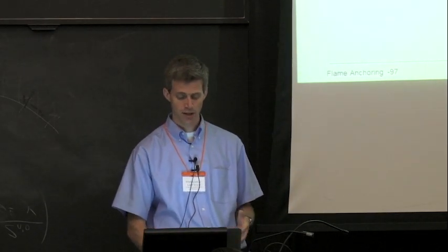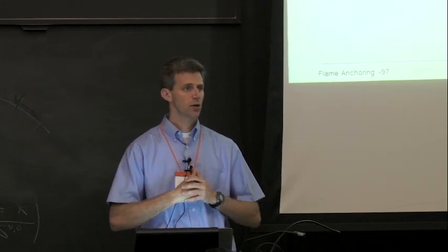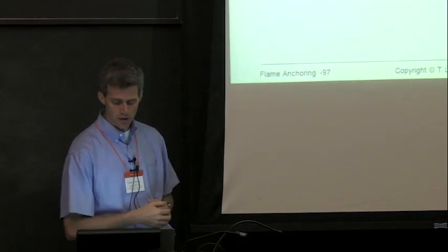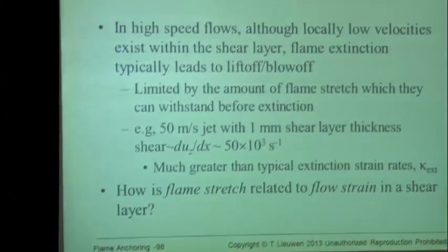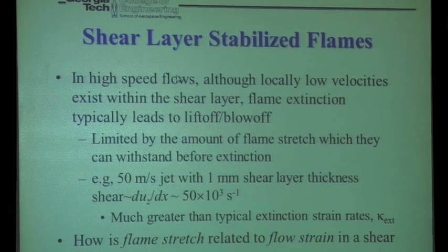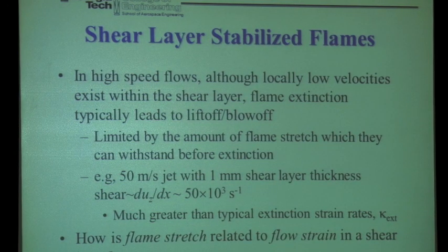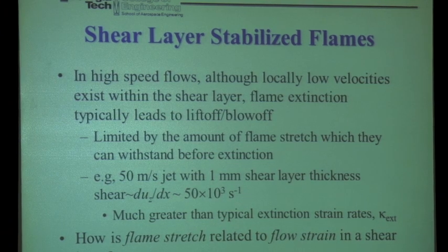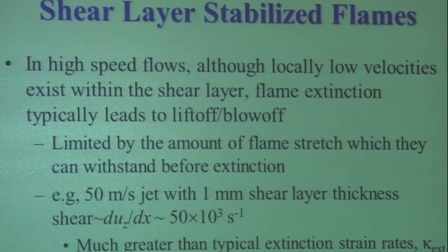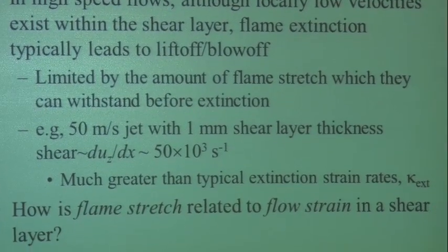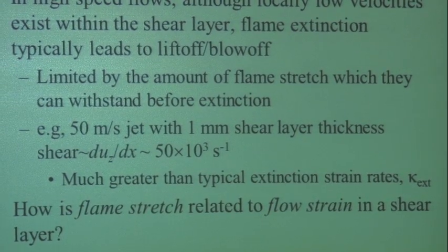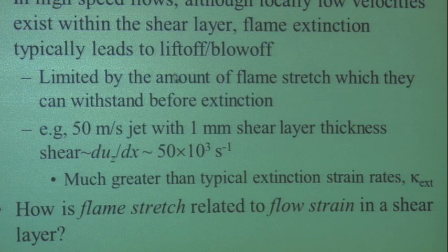I want to look a little more at what is the actual stretch rate that a flame sees. We know that if kappa is greater than kappa extinction, we can expect to see extinction. And kappa extinction is a reasonably well-defined quantity — you can calculate it. But what's kappa? What is the flame actually seeing? In a high-speed flow, the reason flames sit in shear layers is because the velocity is locally low in the shear layer. You might have a very high velocity flow — 50, 100, 300 meters per second — but within some very small region the flow velocity goes to near zero in your boundary layer, where the shear is highest.